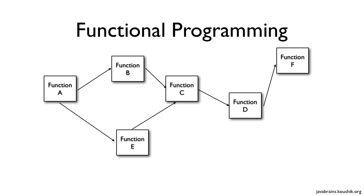If you've written code in some of the older programming languages like C, you would know exactly what this is. When you're writing code in such languages, you think of a problem and then you break it down into different functions. Each function accomplishes a particular unit of work and a function can call other functions — that's how they talk to each other. A single program consists of all these different functions, and when the last function ends, that's when the program is complete.